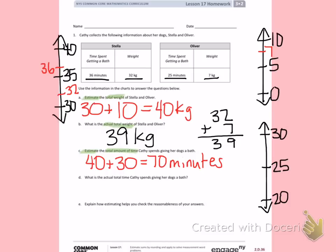Letter D. What is the actual total time Kathy spends giving her dogs a bath? This time I'm going to find the actual total time, so I will use the standard algorithm by adding 36 minutes plus 25 minutes. 6 plus 5 is 11, 3 plus 2 is 5, plus 1 more is 6, so she spends 61 minutes giving her dogs baths.